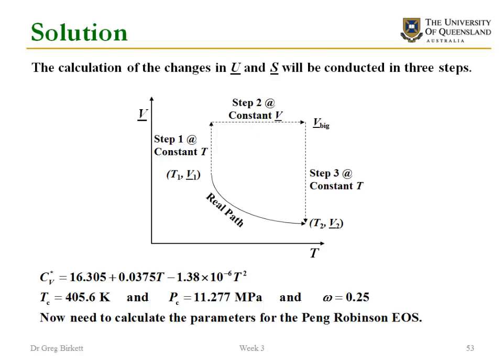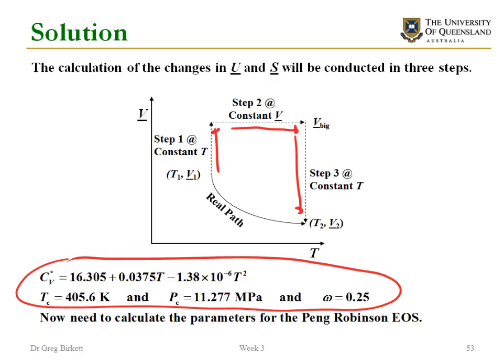We're going to use our three step path as we've done in the examples in this section. And because we're using an equation of state we need to get the parameters that are useful for this. So I've got my critical parameters and because it's the Peng Robinson equation of state I've also got my acentric factor.